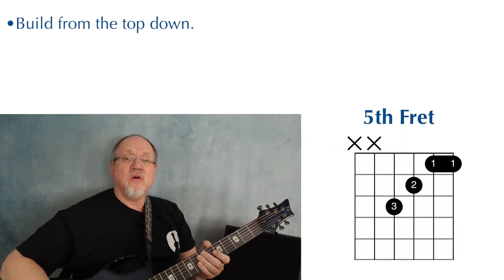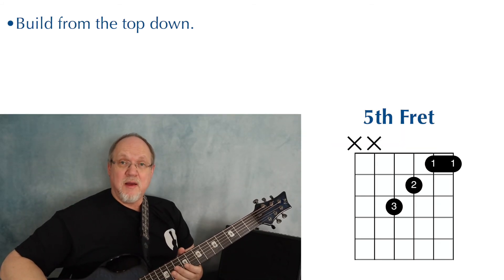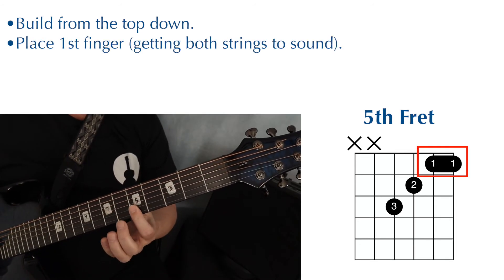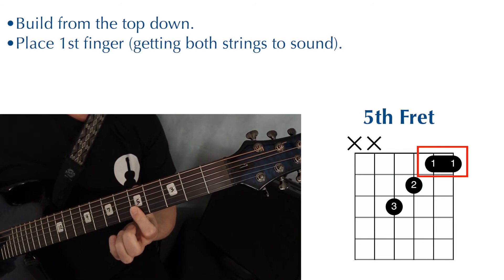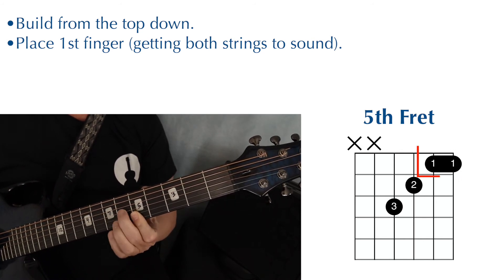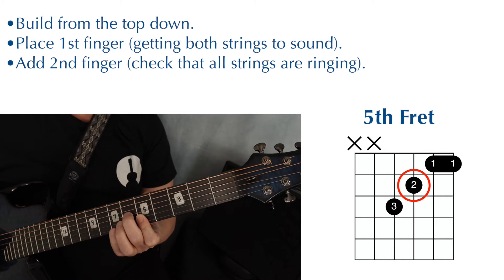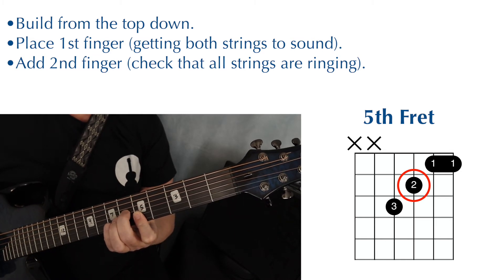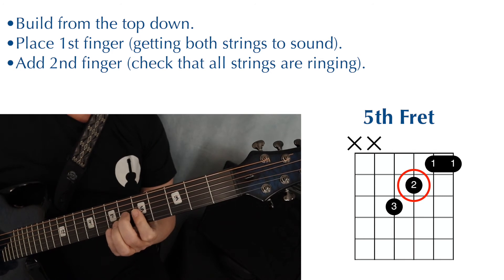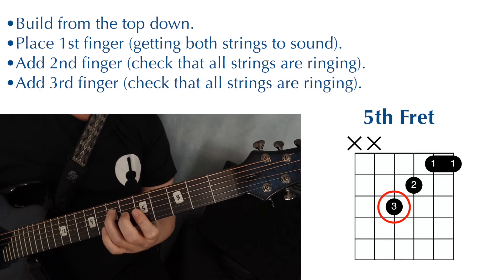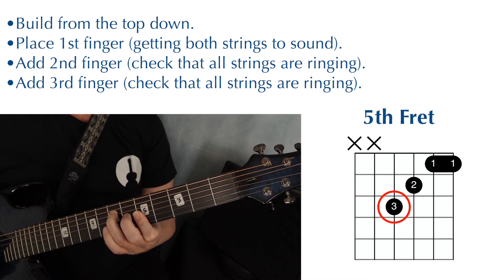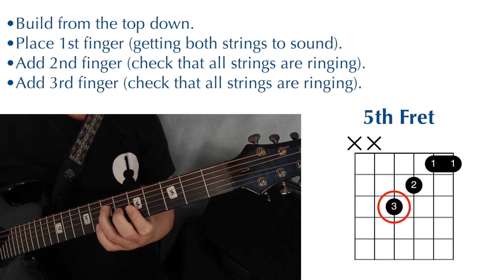As you work on this F chord, try building it finger by finger. First play just the finger one strings, strings one and two. Try to get both of them to ring clearly. Then keep finger one in place. Add finger two. Try to get those three strings to ring clearly. And then add your next finger, finger three. See if you can get them all to ring clearly.